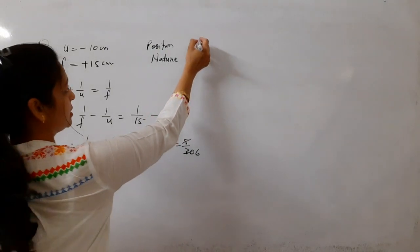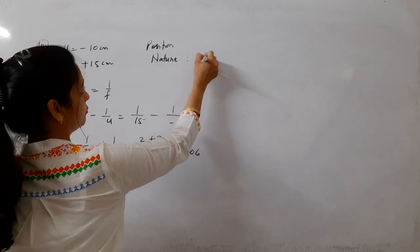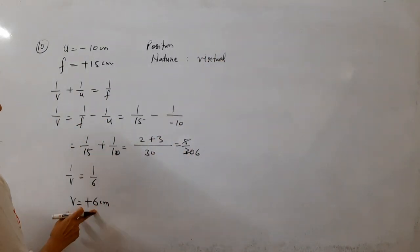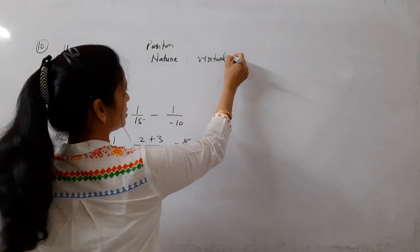Plus ka matlab kya? Virtual image hai. Nature: virtual. Here it is plus 6, so nature of image is virtual, right?